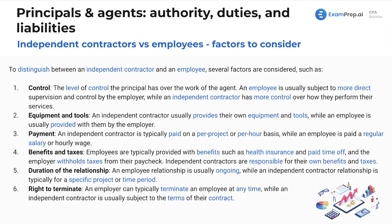Here are some factors to consider. The level of control the principal has over the work of the agent is key. If you're showing up to Burger King, Wendy's, McDonald's — you have to wear a hat, show up at a certain time, say certain phrases, do certain things — that's probably going to make you an employee because they have a lot more control over you. An employee is usually subject to more direct supervision and control by the employer, while an independent contractor has more control over how they perform their services.